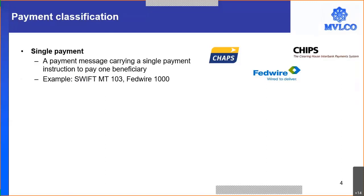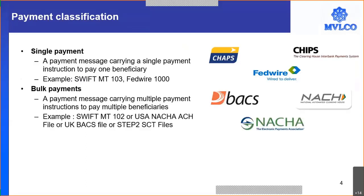The mechanisms available to move a single payment include messaging like SWIFT MT103, which carries only one single credit transfer, or in the USA, the Fedwire 100, which also carries a single payment. So a single payment means a payment transaction in which only one beneficiary is expected to be paid.